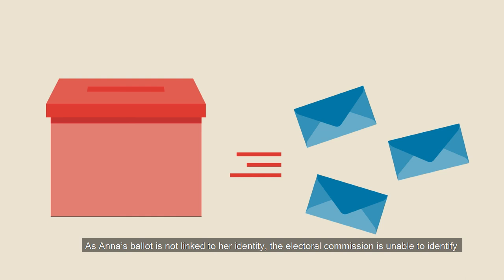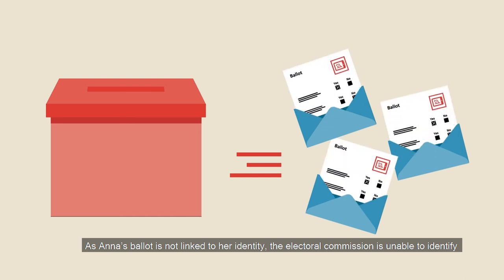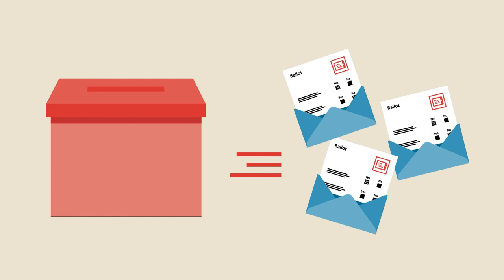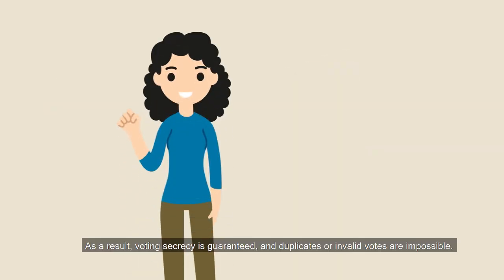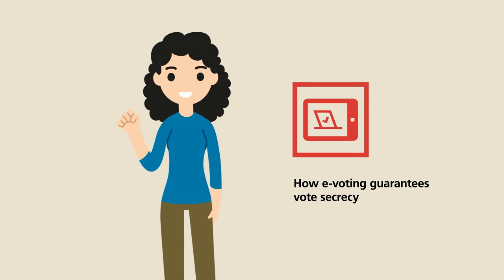As Anna's ballot is not linked to her identity, the Electoral Commission is unable to identify who has voted, but able to determine that the ballot is valid. As a result, voting secrecy is guaranteed, and duplicates or invalid votes are impossible.